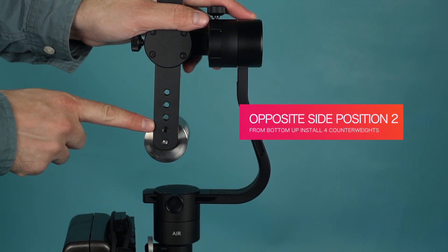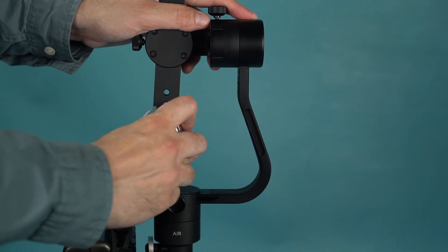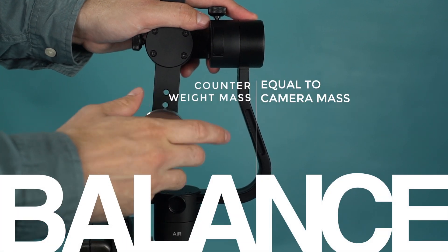On the opposite side, in position two, install four counterweights. Counterweight mass should be equal to the camera's mass.